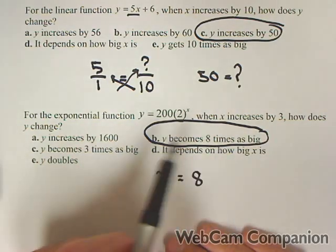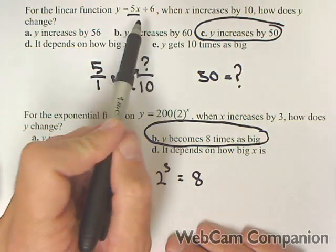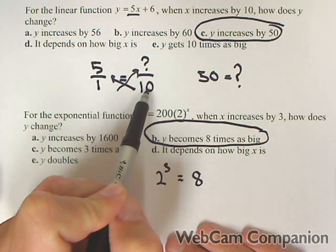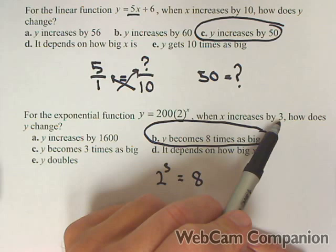So that's the difference between exponential growth and linear growth. Linear growth told us what amount it goes up by each time. So we just had to add five 10 times. This tells us what factor it goes up by each time. So we had to multiply by two three times.